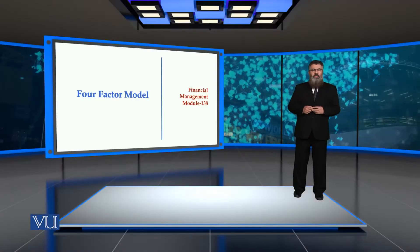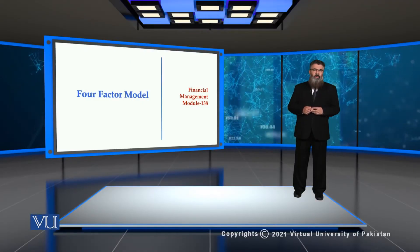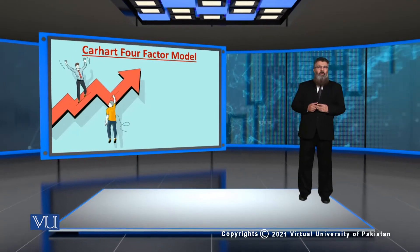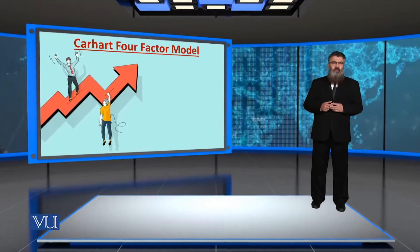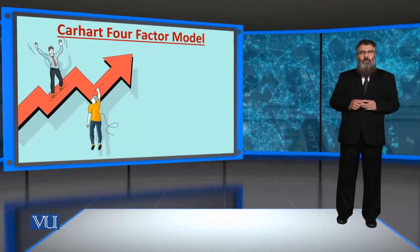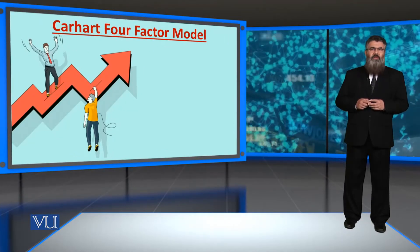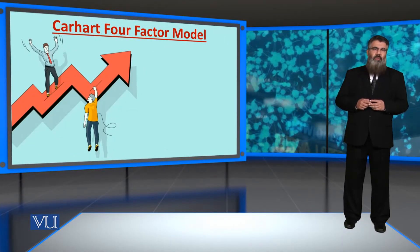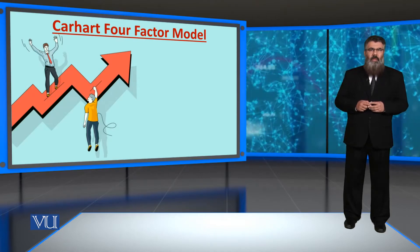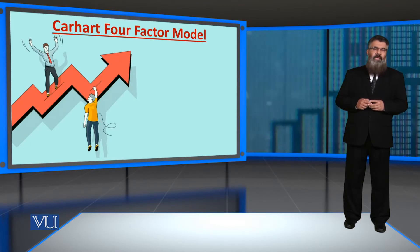This module is about the four-factor model, also called the Carhart's four-factor model. To understand this model, we need to link it with the previous three-factor model that we have learnt in the last module, which is called the Fama and French three-factor model.